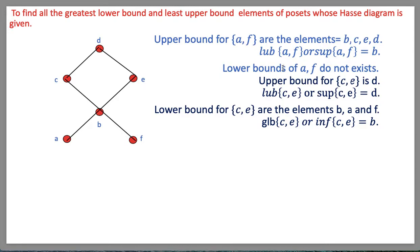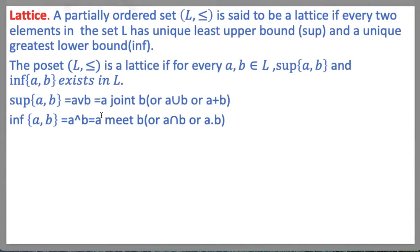Now consider the set {c, e}. The upper bound of {c, e} is d, which is also the least upper bound — we denote it as supremum{c, e}. The lower bounds of {c, e} are a, b, and f, so the greatest lower bound is b, since it is the greatest among the lower bounds a, b, and f.